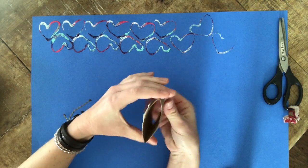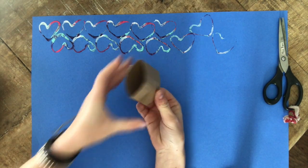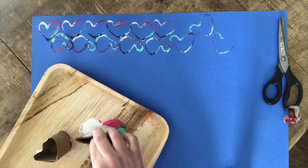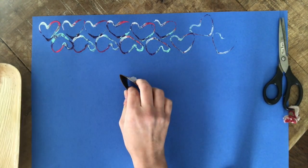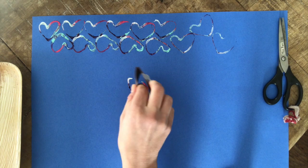You could also bend it into a different shape. I'm doing more of an organic shape now. I'm dipping it in and I'm going to use this shape to create a flower.